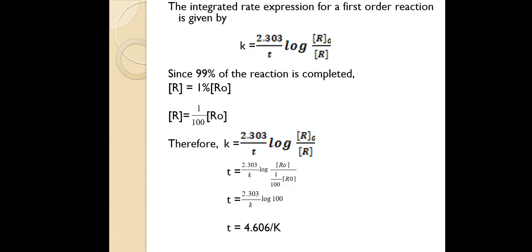The integrated rate equation for a first order reaction is: k = (2.303/t) × log(R₀/R), where k is the rate constant, t is the time, R₀ is the initial concentration, and R is the concentration at time t. Now, what is given in the question is that 99% of the reaction is completed. If 99% is completed, how much is left?